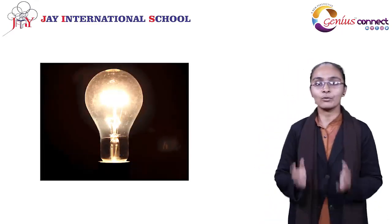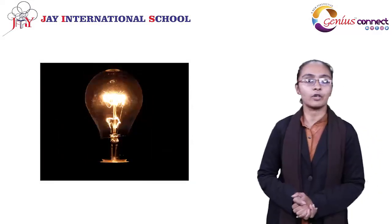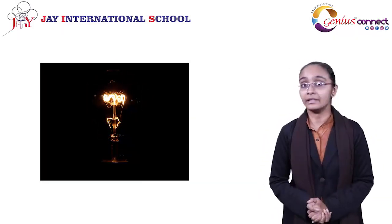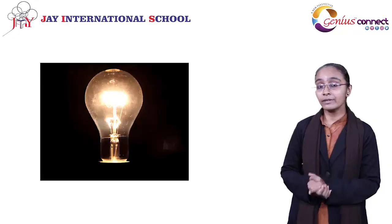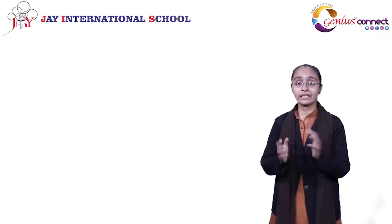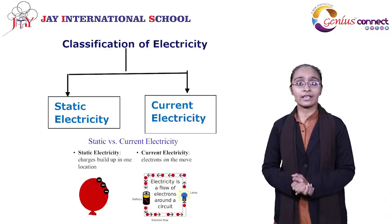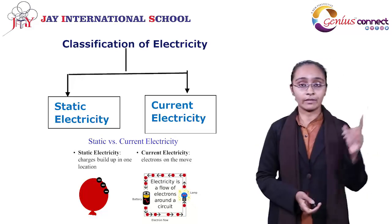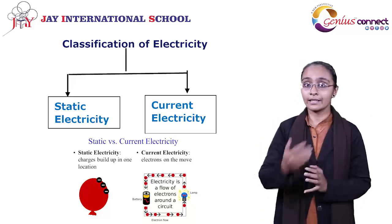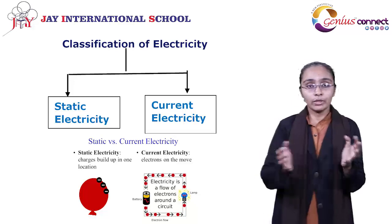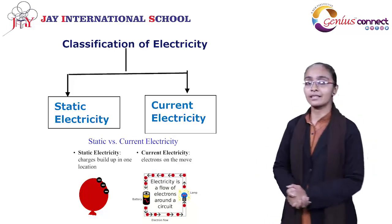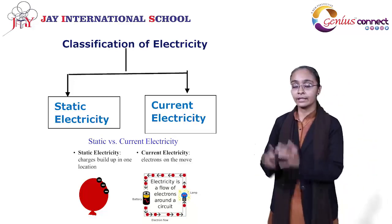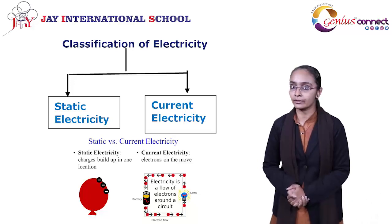Electricity is the most versatile form of energy, which is already needed in this modern life. When we consider electricity, it has exactly two types. One is static electricity and the second one is current electricity. Today we will discuss both: what is the meaning of static electricity and what is the meaning of current electricity.